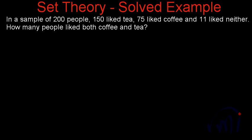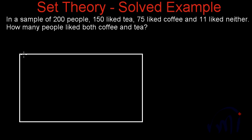I am going to solve it using Venn diagrams. Let me represent the sample of 200 people as the universal set, which we represent as a rectangle. This is the universal set psi, and the cardinal number of psi is equal to 200 — the sample size. Out of these 200 people, 150 like tea and 75 like coffee. Let me represent the people who like tea in green and the people who like coffee in orange color.